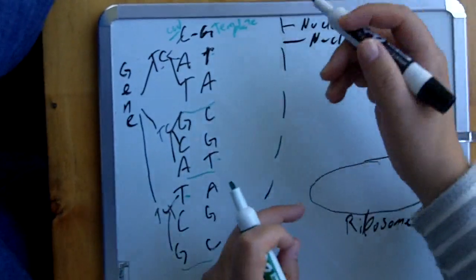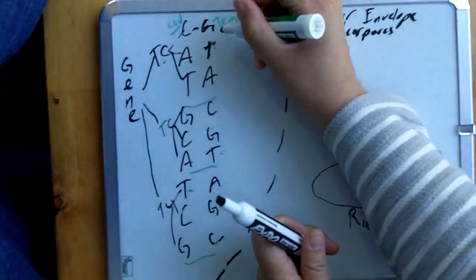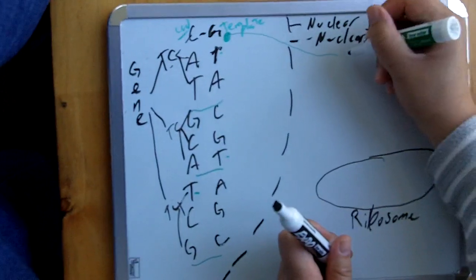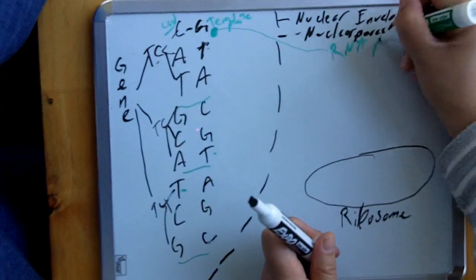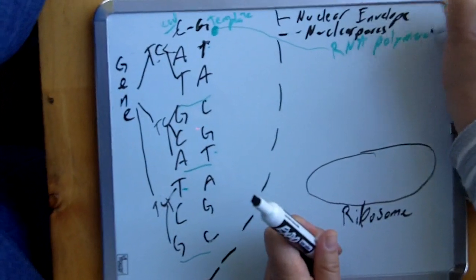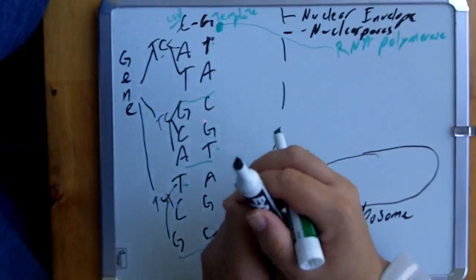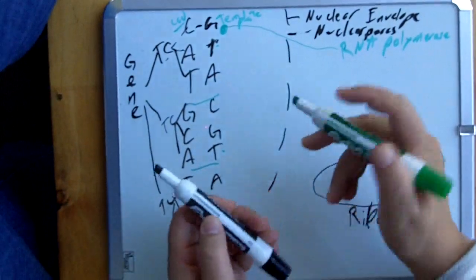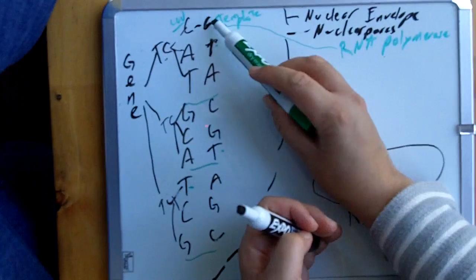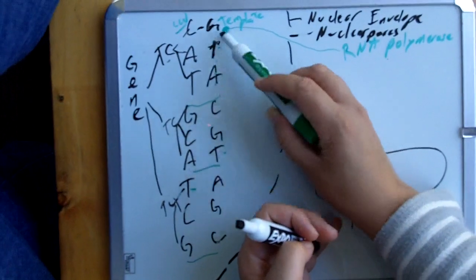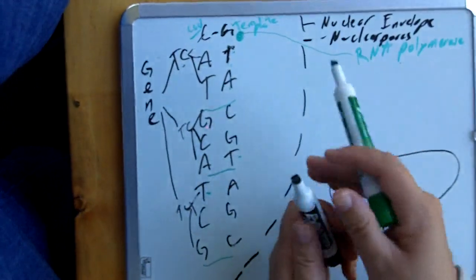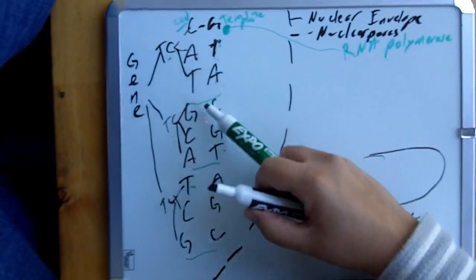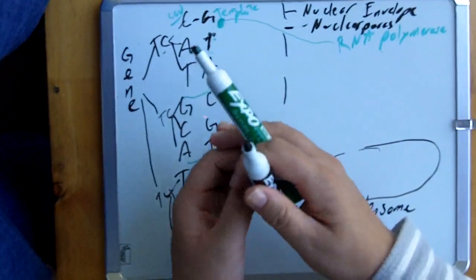We have this little enzyme here, and the name of that enzyme is called RNA polymerase. What RNA polymerase's job is to basically find a match — a temporary match — for the template strand. So this is the template strand, and the job of RNA polymerase is to find a temporary date for each one of these nucleotides or nitrogenous bases.